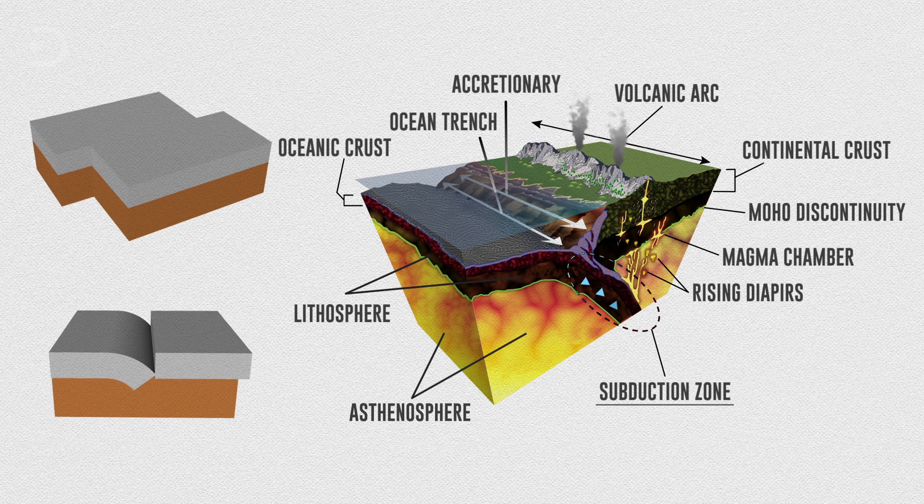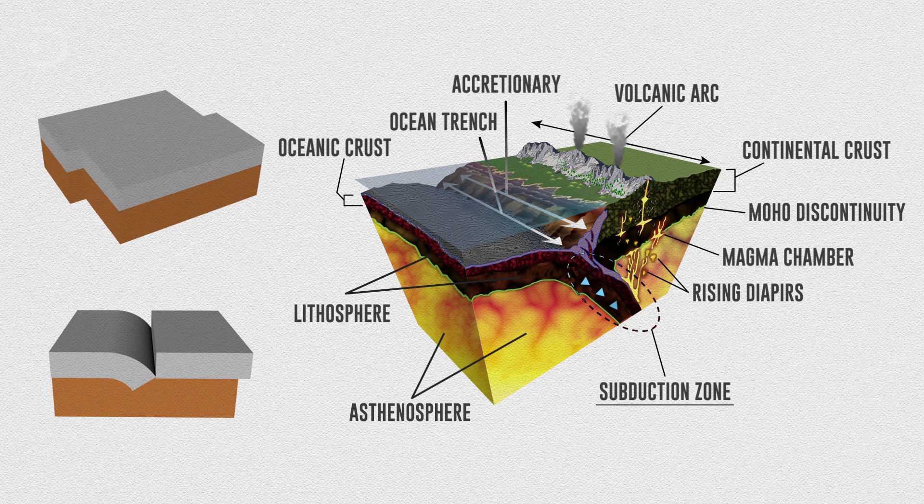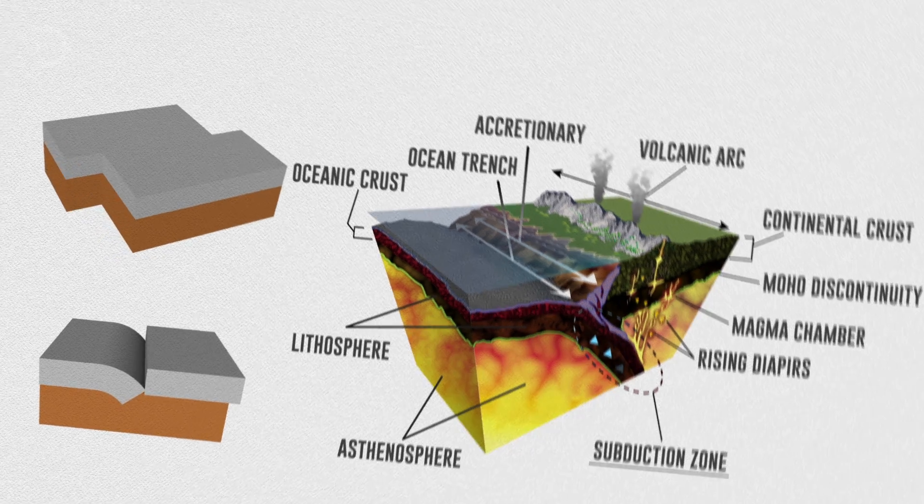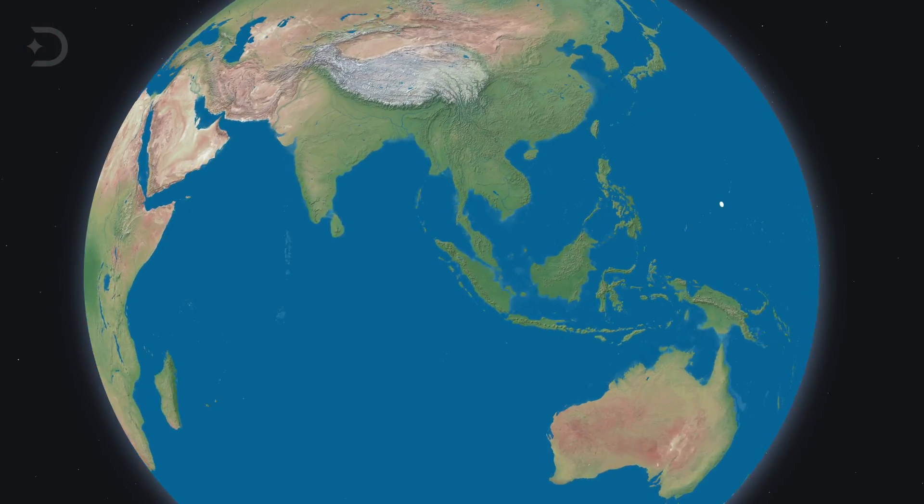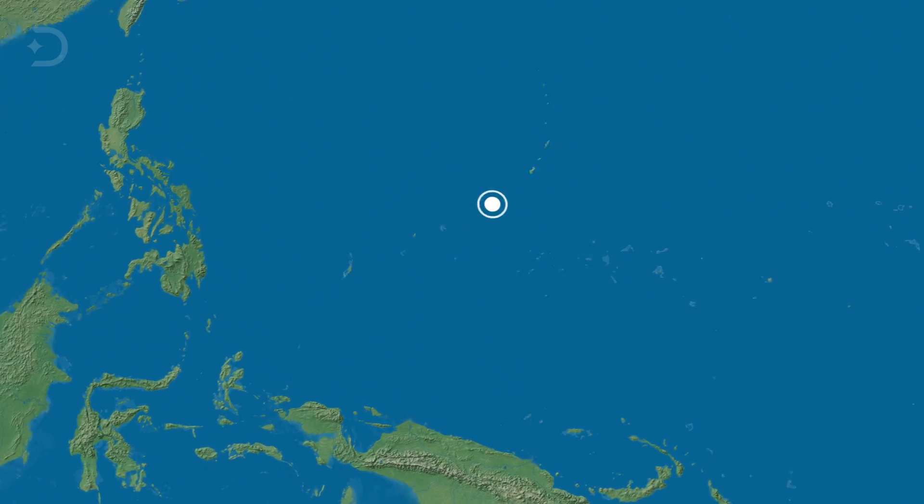Where these two tectonic plates meet at this subduction zone, one plate bends and slides underneath the other, which then curves down into the hotter layer under the crust called the mantle. One of these places where two oceanic plates meet is the Mariana Trench in the western Pacific Ocean.